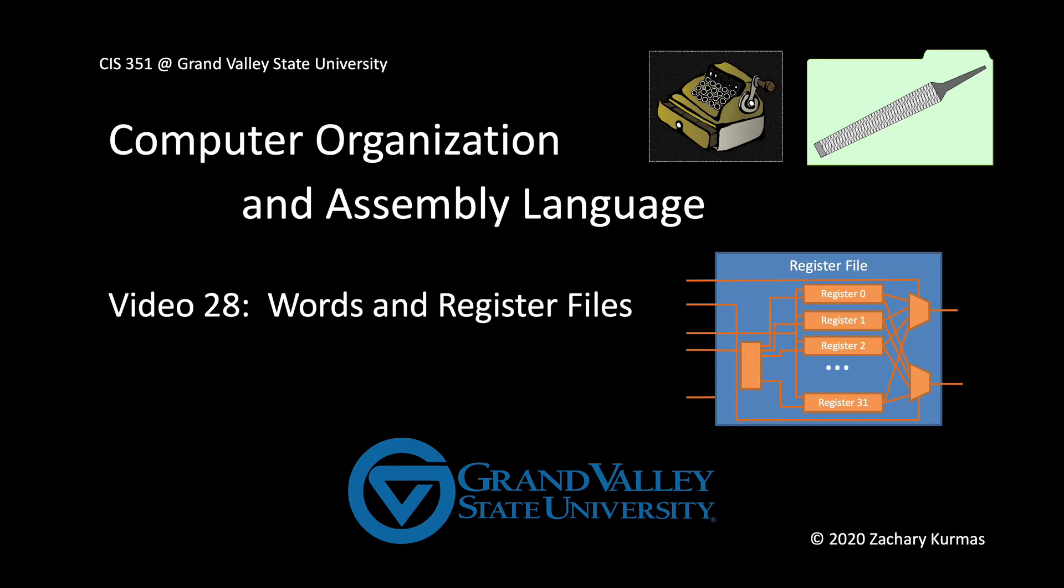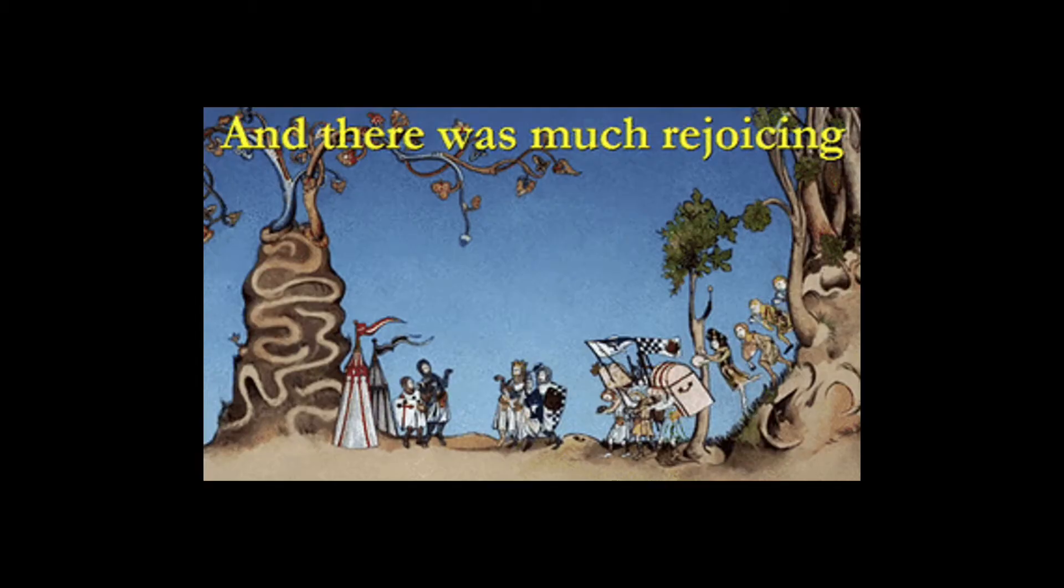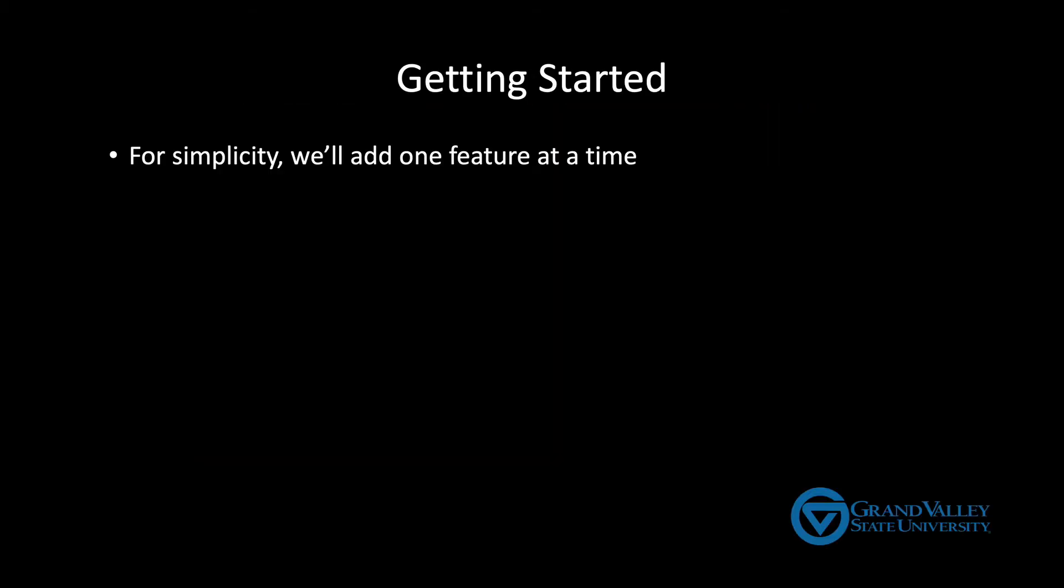So it's finally time to start building a real general-purpose CPU. To keep things simple, or at least as simple as possible, we'll start slow and add one feature at a time. Initially our CPU will only be able to handle basic arithmetic, statements like x equals y plus z, a equals b and c, and so on.